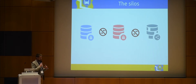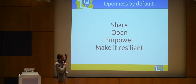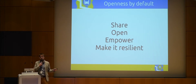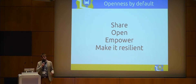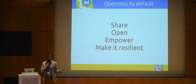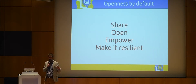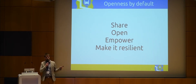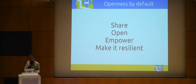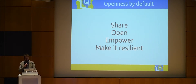In an ideal situation, we would need a system with openness by default. What I mean by openness: first, to share the data — which is the main goal. Also, you would open the software you use to share this data, and open your own organization to external partners. You would empower the community that is using, managing, and creating the data, and you would make the system more resilient. Openness is really a state of mind — it's not just a single process.